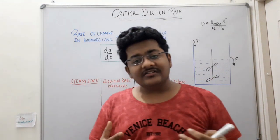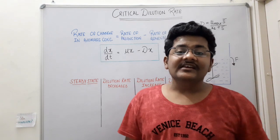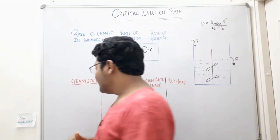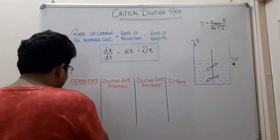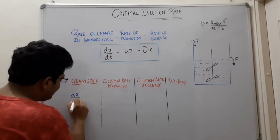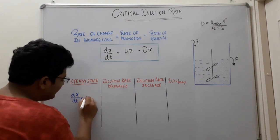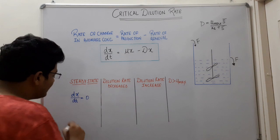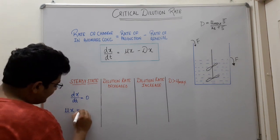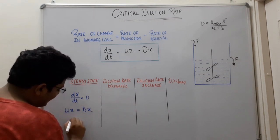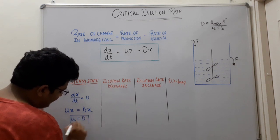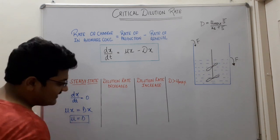Under steady state conditions, dX/dt is equal to zero — there is no change in the biomass concentration inside the bioreactor. So dX/dt = 0 means μX = DX, which means μ = D. This holds under steady state conditions.